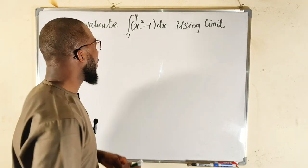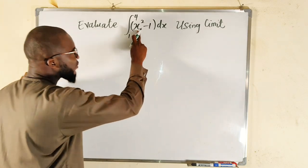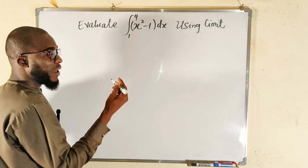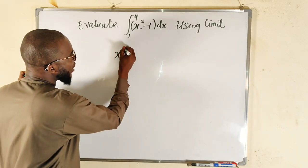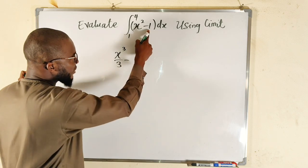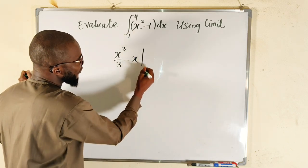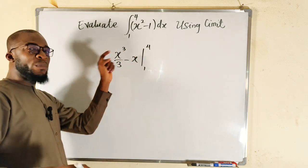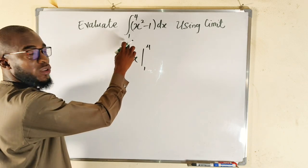To integrate x squared, you need to add 1 to the exponent to make it 3, then divide by the new exponent. This gives us x to the third power divided by 3. The integral of 1 with respect to x gives us x. The limit is from 1 to 4.